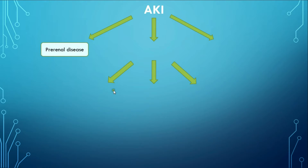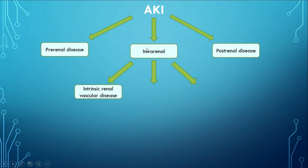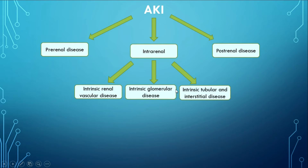Regarding etiologies, AKI can be classified as pre-renal, intrinsic (or intra-renal), or post-renal. Intrinsic renal causes include intrinsic renal vascular disease, intrinsic glomerular disease, and intrinsic tubular and interstitial disease. The most common ones seen in clinical practice are pre-renal AKI and ischemic acute tubular necrosis, which falls under the intrinsic tubular and interstitial category.